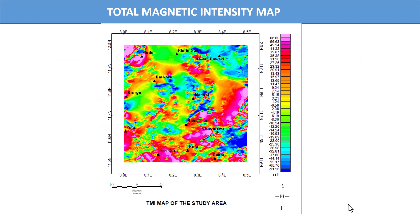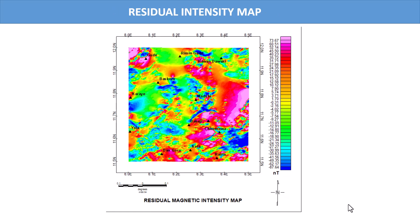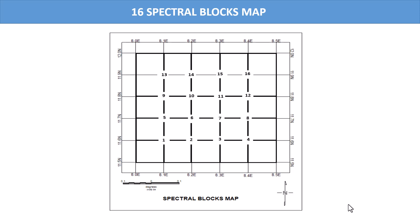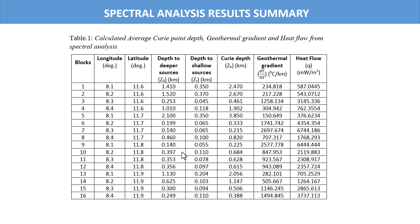These are some of the results of the analysis: the total magnetic intensity (TMI) map, the residual intensity map, and the regional intensity map. For spectral analysis, the whole grid is divided into 16 spectral blocks — we're going to see how to do this splitting into 16. The result of the spectral analysis for all 16 blocks includes: latitude and longitude, depth to deep sources (Z naught), depth to shallow sources (Z subscript t), Curie point depth obtained from those two, temperature point, geothermal gradient (dT/dz), and heat flow. We will see how to fill all the values in this table.